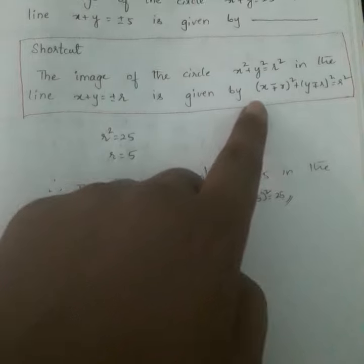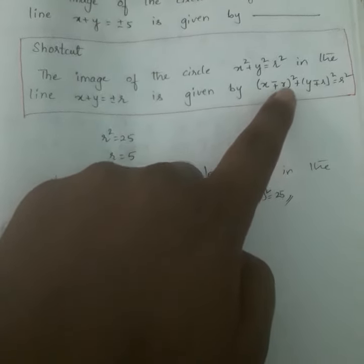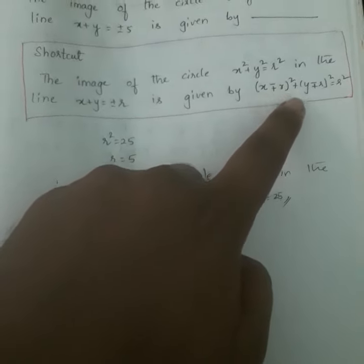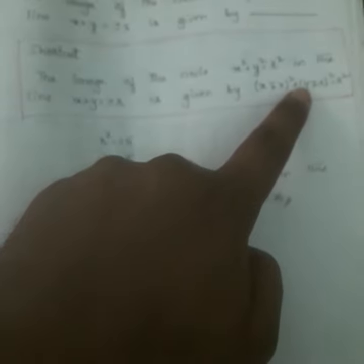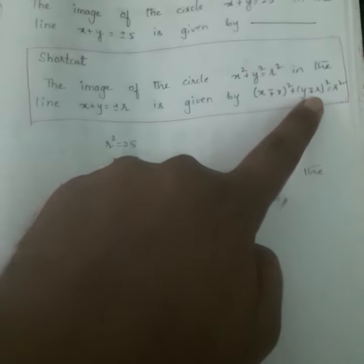(x - (+r))² + (y - (+r))² = r². Okay, so here my task is to find the r² value.